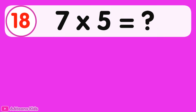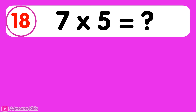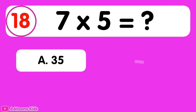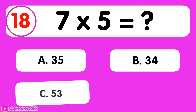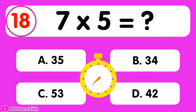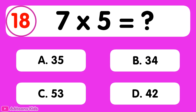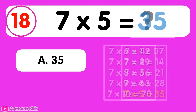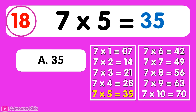7 times 5 is equal to... 35. 7 times 5 is 35.